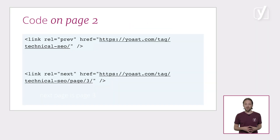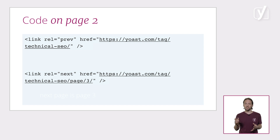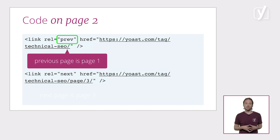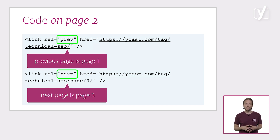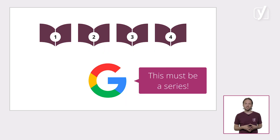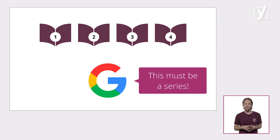Let's now look at a fragment of the code in the metadata on that same page. In this example, the code simply indicates that the previous page in this archive is page 1, and that the next page in this archive is page 3. In the past, adding this code helped Google distinguish a collection of pages as a series, which in turn allowed the search engine to send users to the most relevant page, usually the first page of the archive.